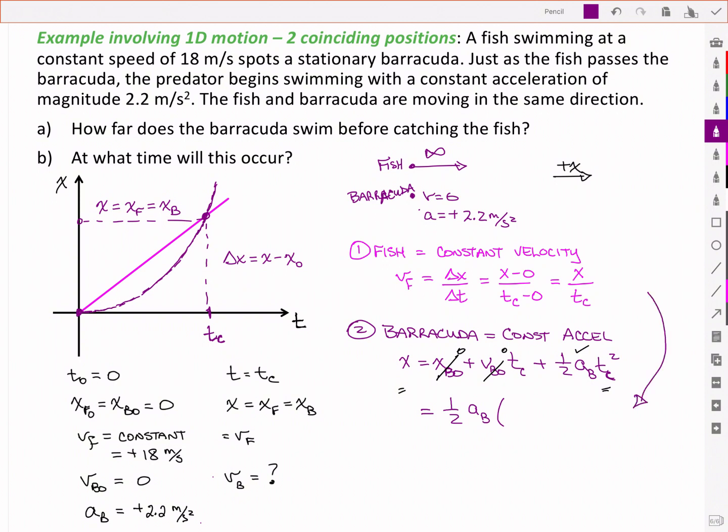So in other words, we're going to substitute from up above, where tc is just the position, the common position, divided by the velocity of the fish.